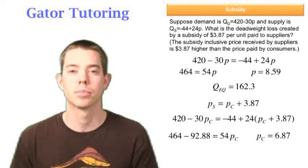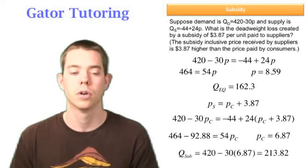Doing some algebra we find that the price that consumers pay is $6.87. So the quantity with the subsidy is 213.82 because again we plugged in PC this time to our demand function.